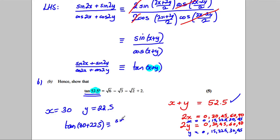So tan of 30 plus 22.5, using this identity, would be equal to sine of twice the X, so sine of 60, plus sine of twice this, which would be sine of 45, all divided by cosine of 2X, which would be cosine of 60, plus cosine of 45.